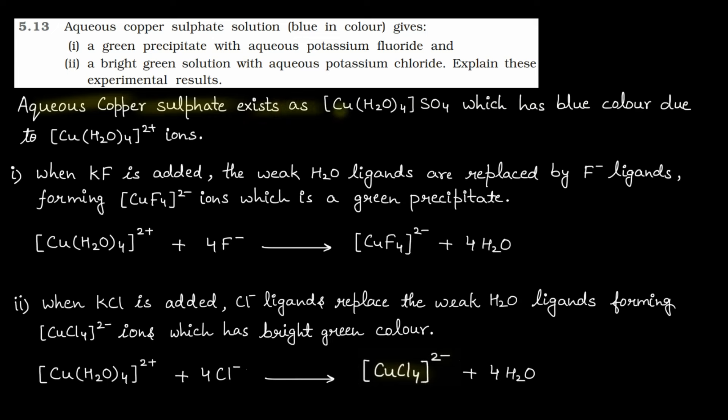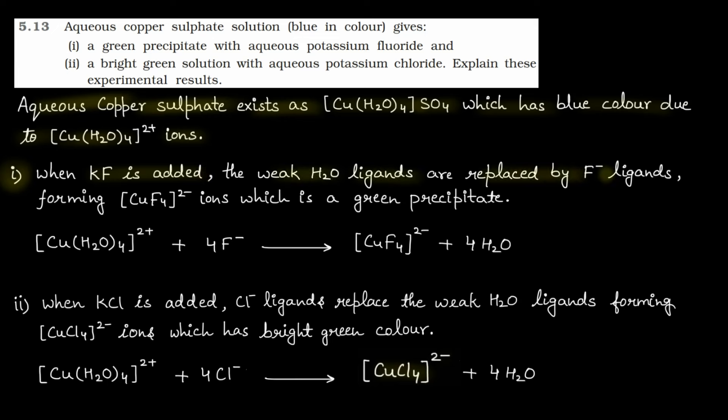Aqueous copper sulfate exists as [Cu(H2O)4]SO4, which has blue color due to [Cu(H2O)4]^2+ ions. First part: when KF is added, the weak H2O ligands are replaced by F- ligands, forming [CuF4]^2- ions, which is a green precipitate. Here you have written it. You get [CuF4]^2- with H2O outside.